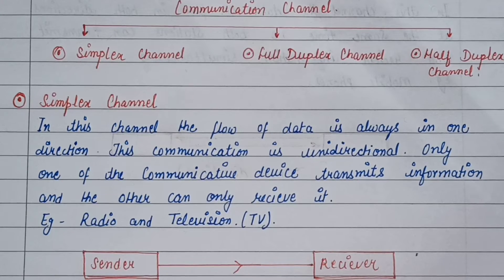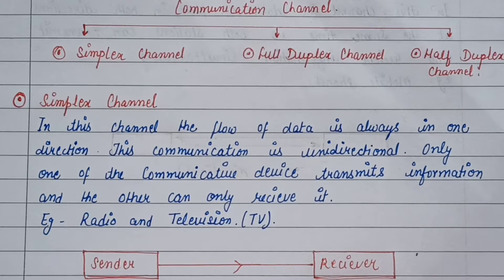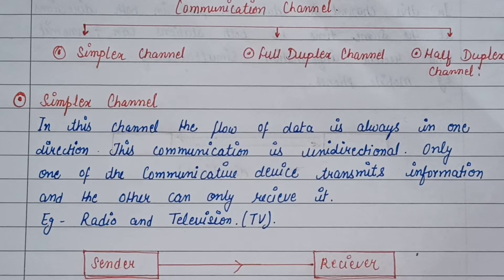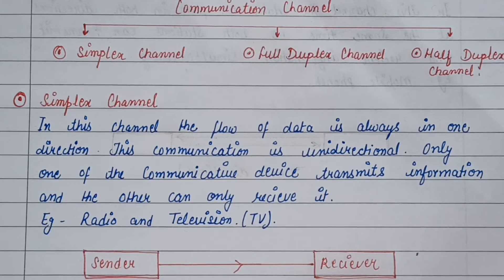Only one of the communicative devices transmits information and the other can only receive it. Sirf ek hi communicative device data ko transmit kar sakti hai, aur jo doosri hai wo receive kar sakti hai. For example, radio and television. Radio ko hum sirf sun sakte hain — hum koi data apni taraf se transfer nahi kar sakte, hum sirf data le sakte hain. Television bhi iska ek example hai.